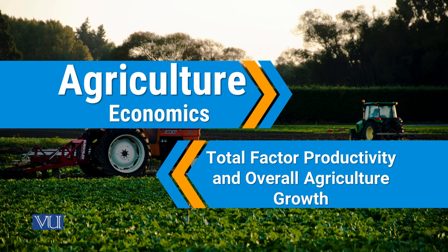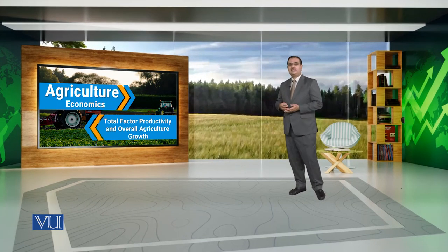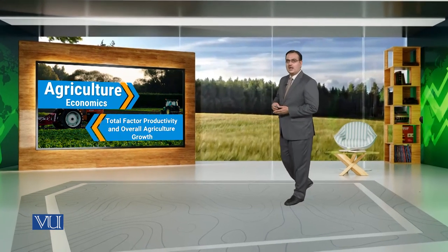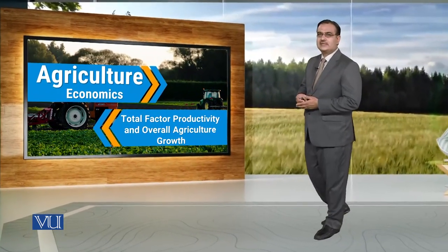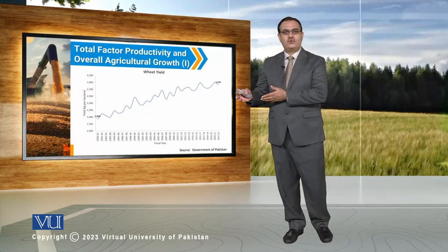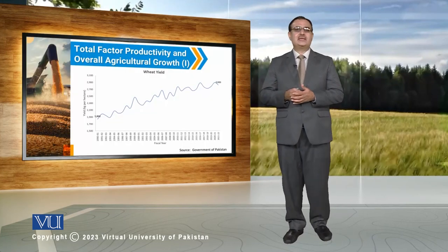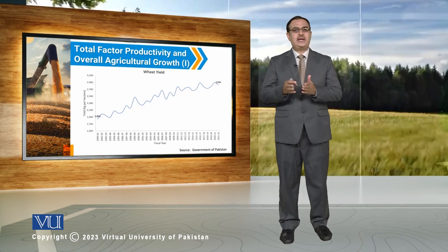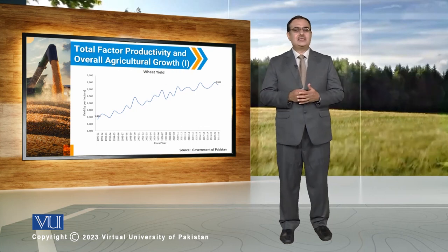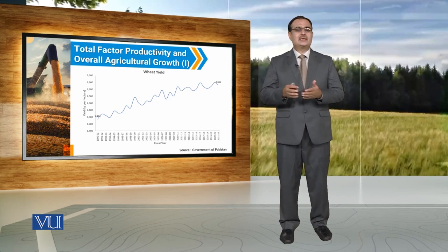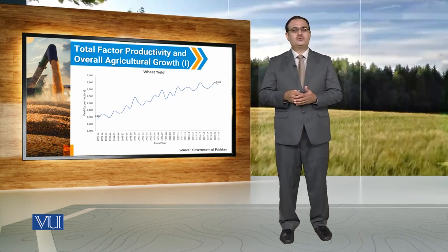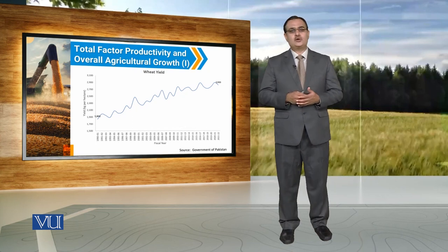Total Factor Productivity and Overall Agricultural Growth. With the improvement of productivity in the agricultural sector, there is an increase in overall agricultural sector growth. If productivity improves in the agricultural sector, it will make a contribution towards agricultural growth. And when the agricultural sector grows, it will make a contribution towards the growth of the economy.